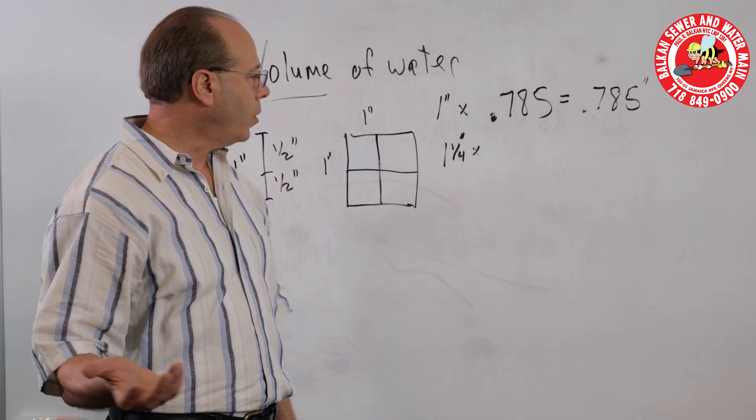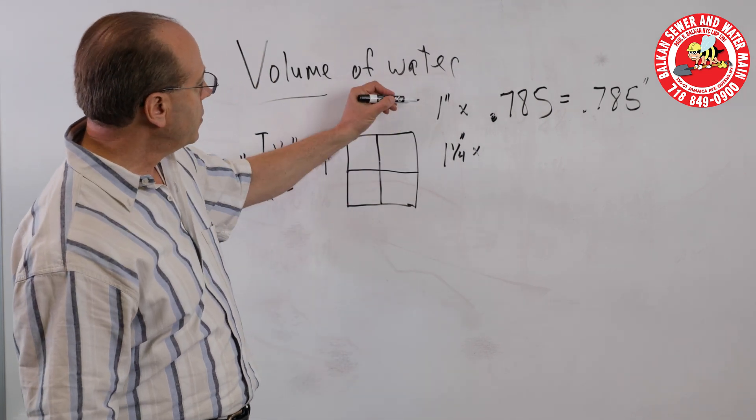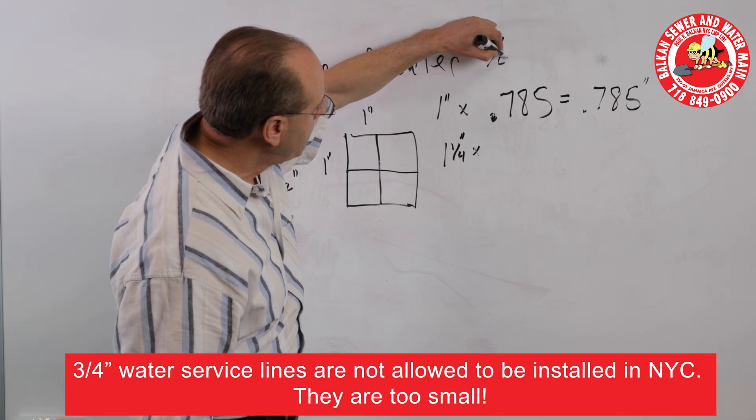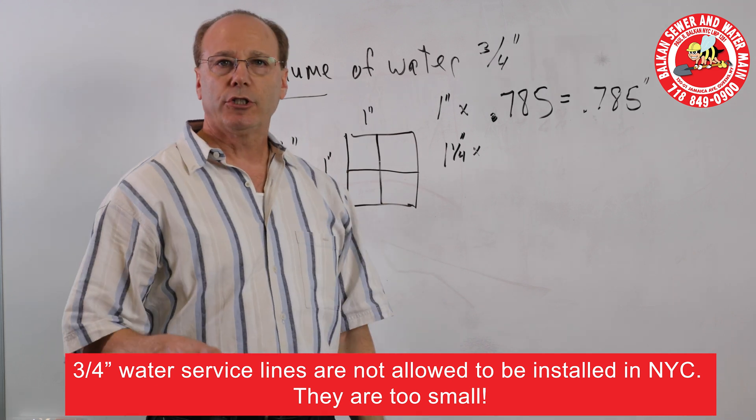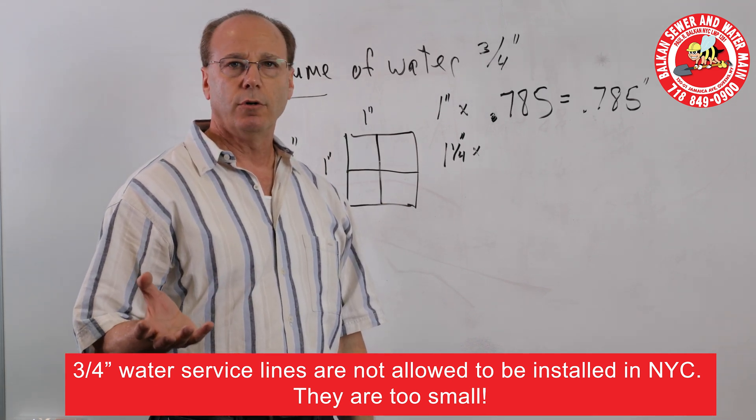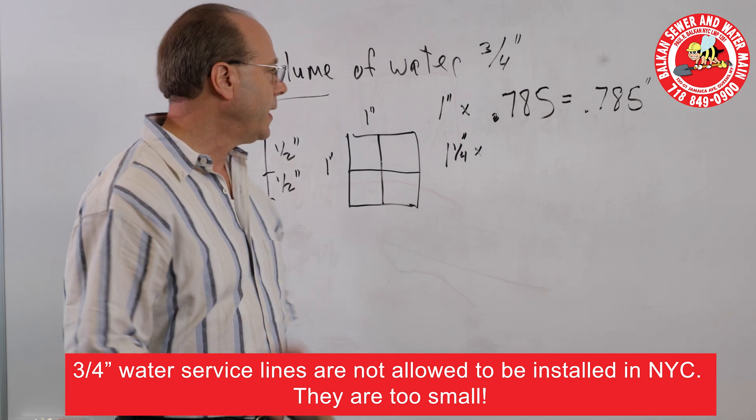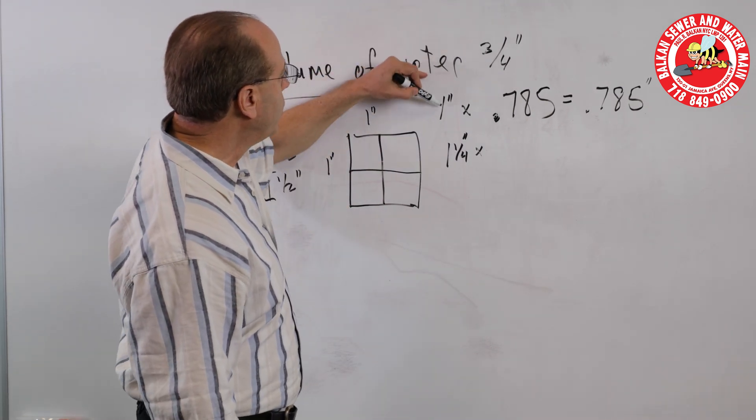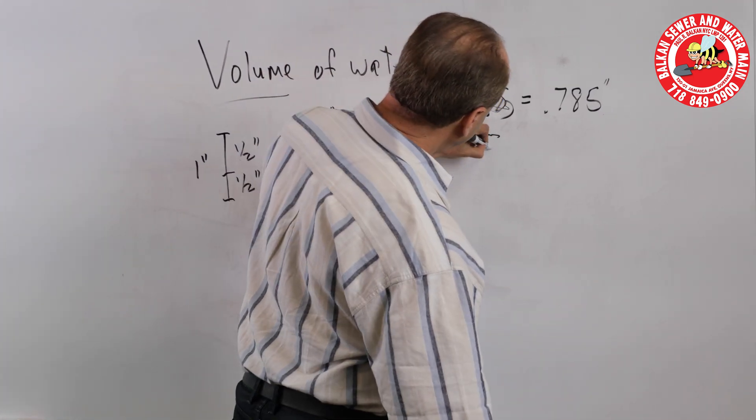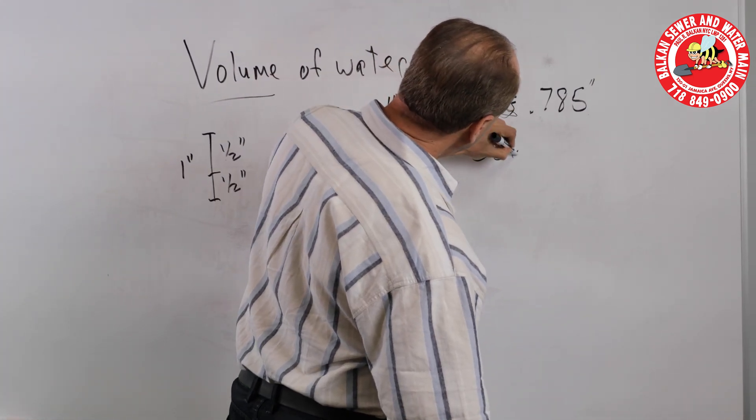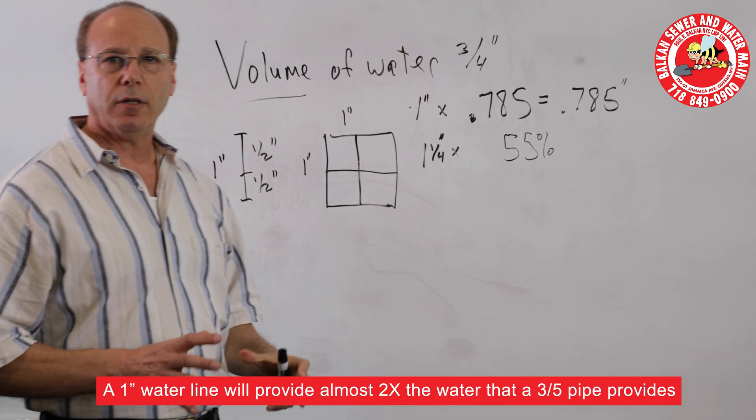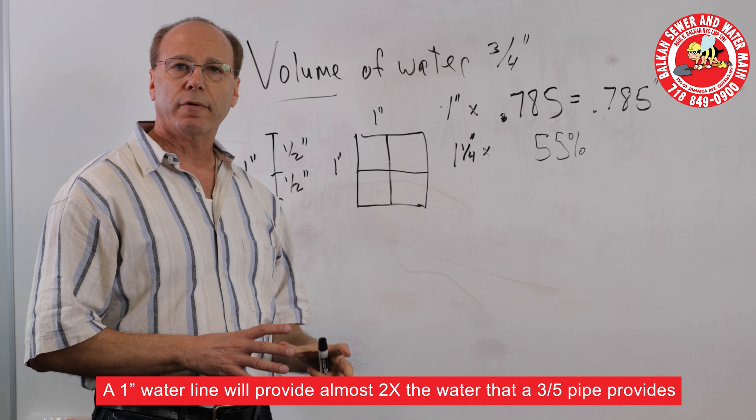Now, on the other hand, if you had a three quarter inch pipe, which is not legal in New York, if you ever replace a water service in New York, the minimum size is one inch, by the way. If you go from three quarter to one inch, inch and a quarter is about 55% more water than one inch. A one inch is almost double the volume of a three quarter inch pipe.